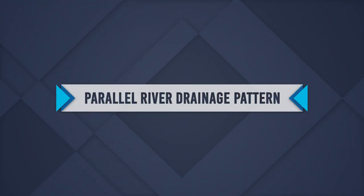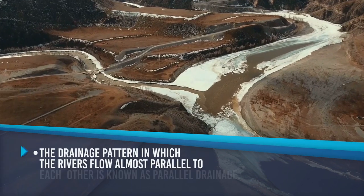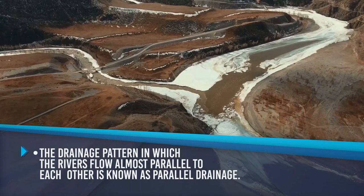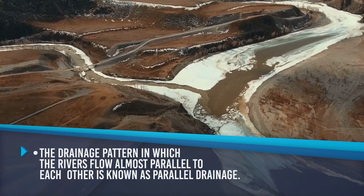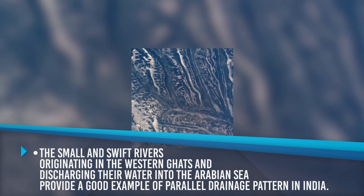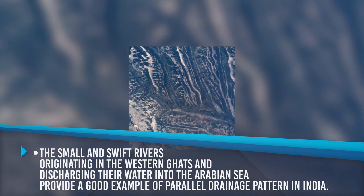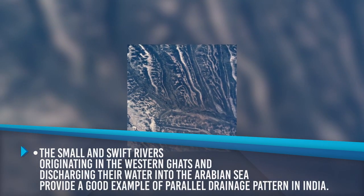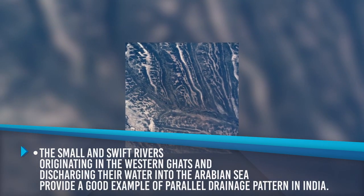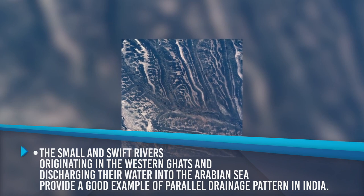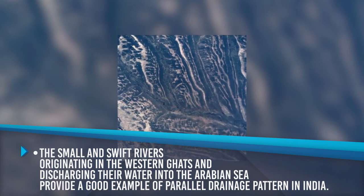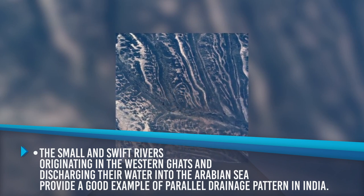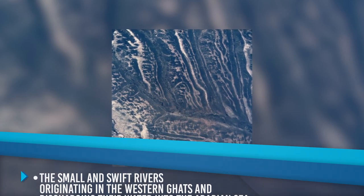Parallel River Drainage Pattern: The drainage pattern in which rivers flow almost parallel to each other is known as parallel drainage. The small and swift rivers originating in the Western Ghats and discharging into the Arabian Sea provide a good example of the parallel drainage pattern in India.